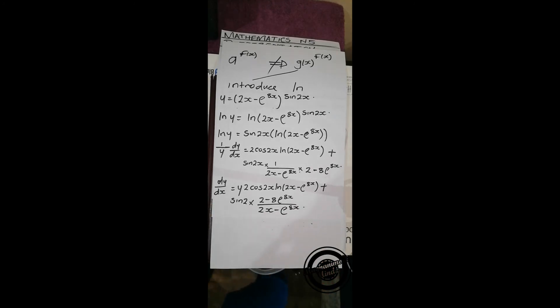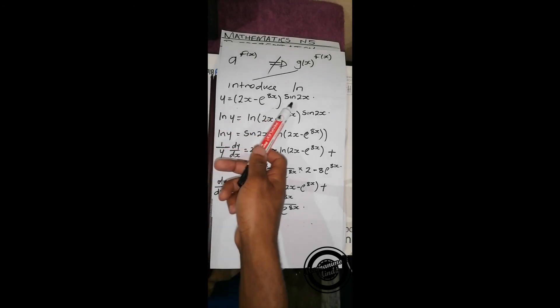Then this is our derivative, but we are not done yet, because we've got y here, and we don't need this y. We can actually get rid of this y, because we know that y equals this. So we replace this y by this.